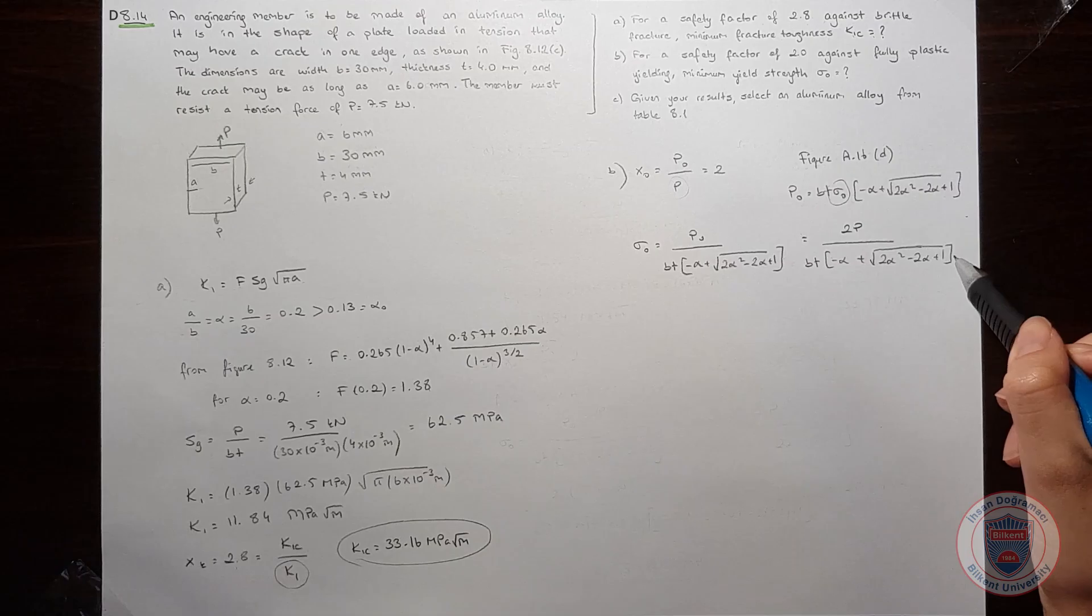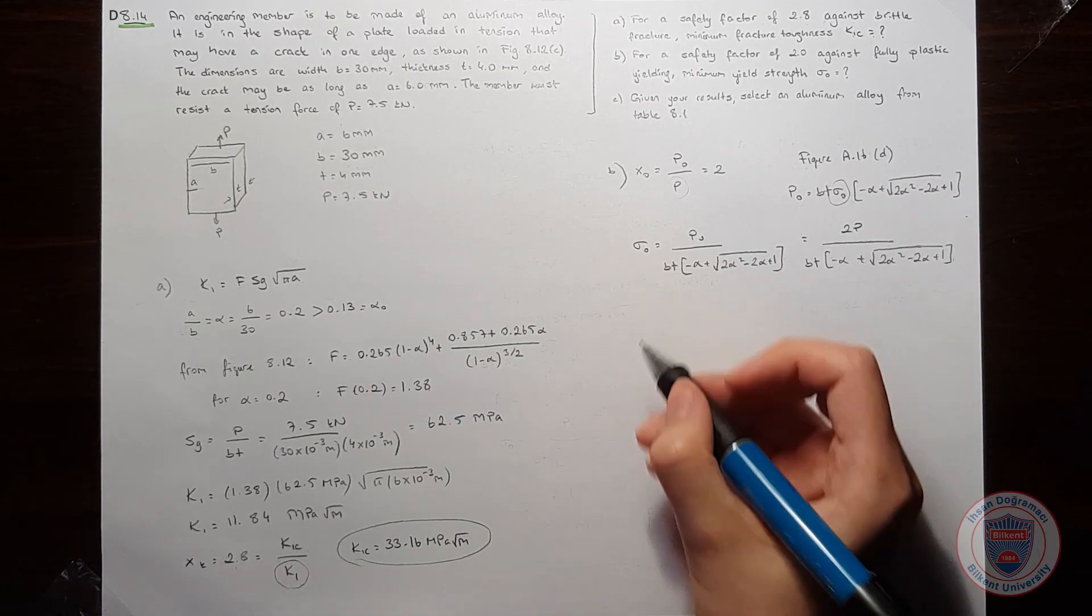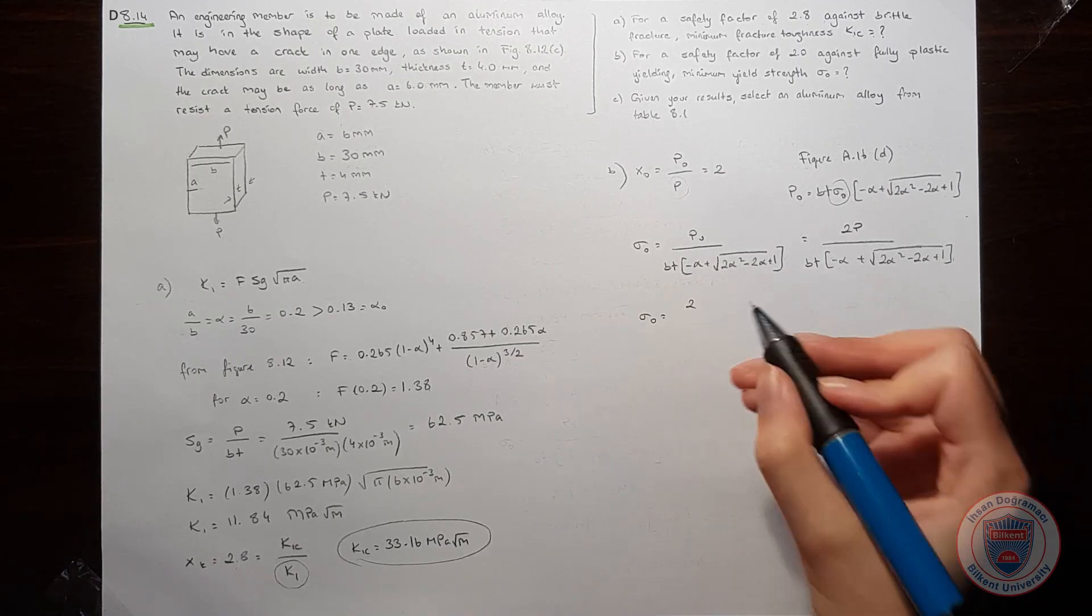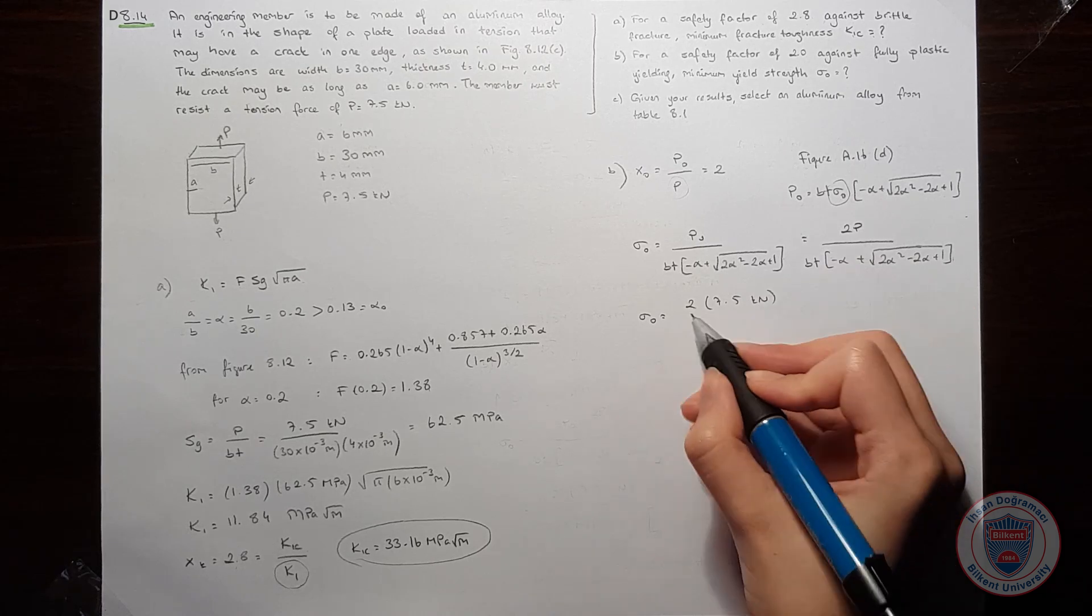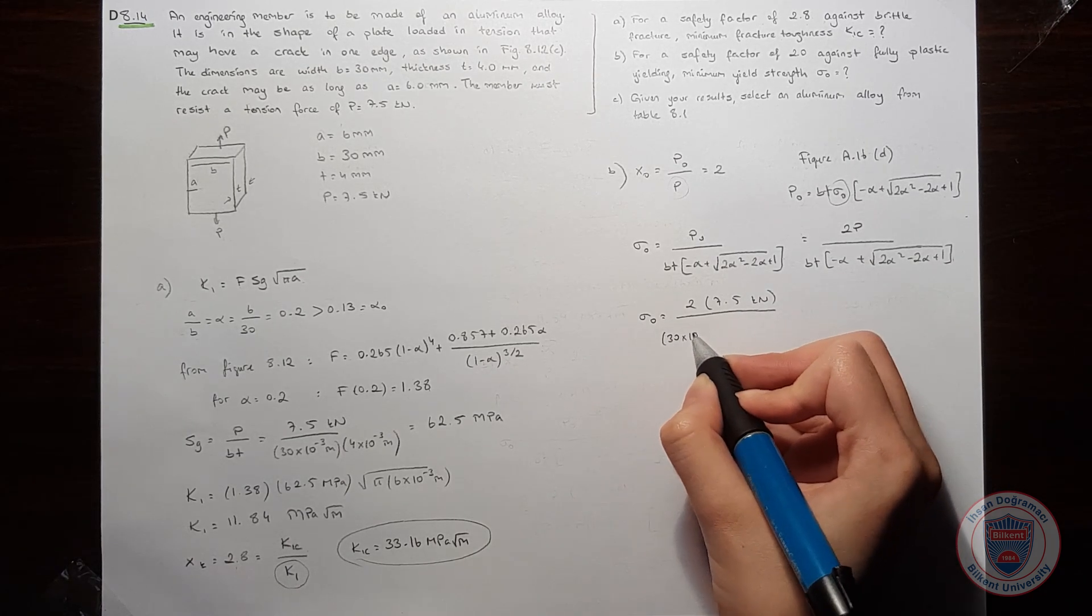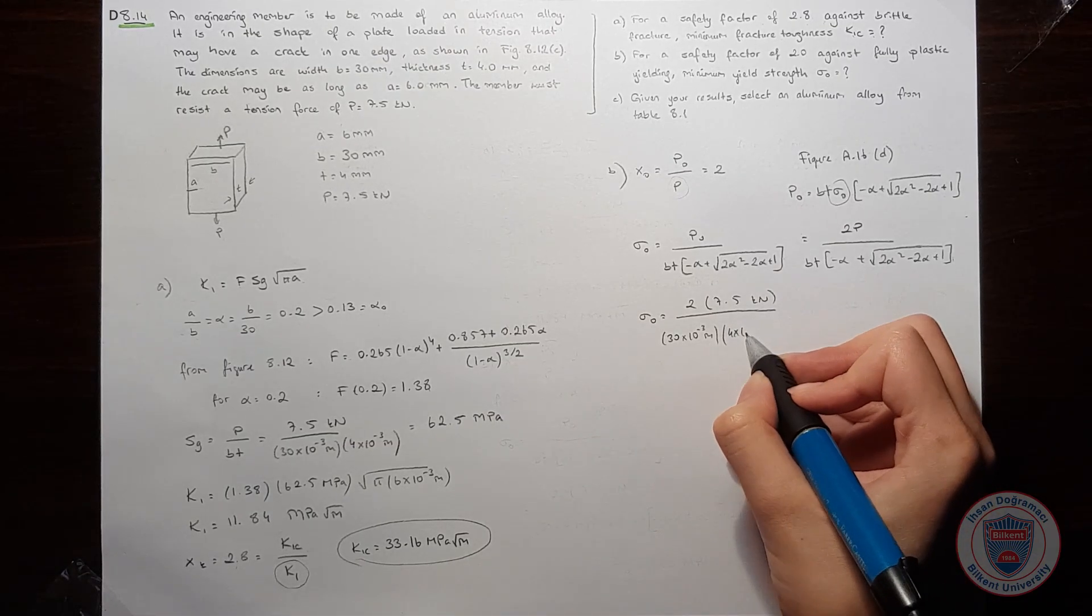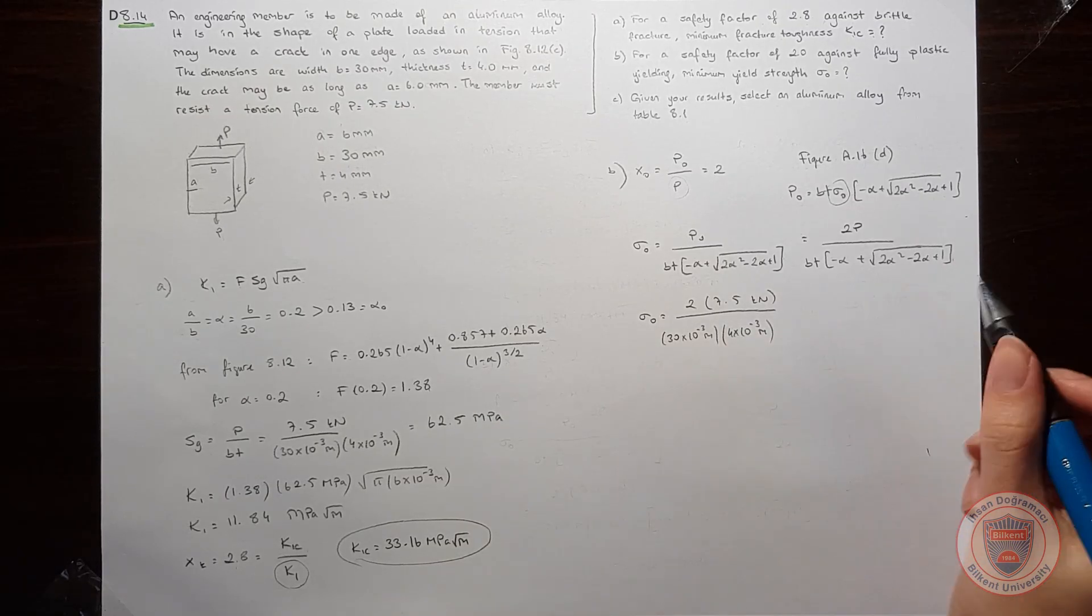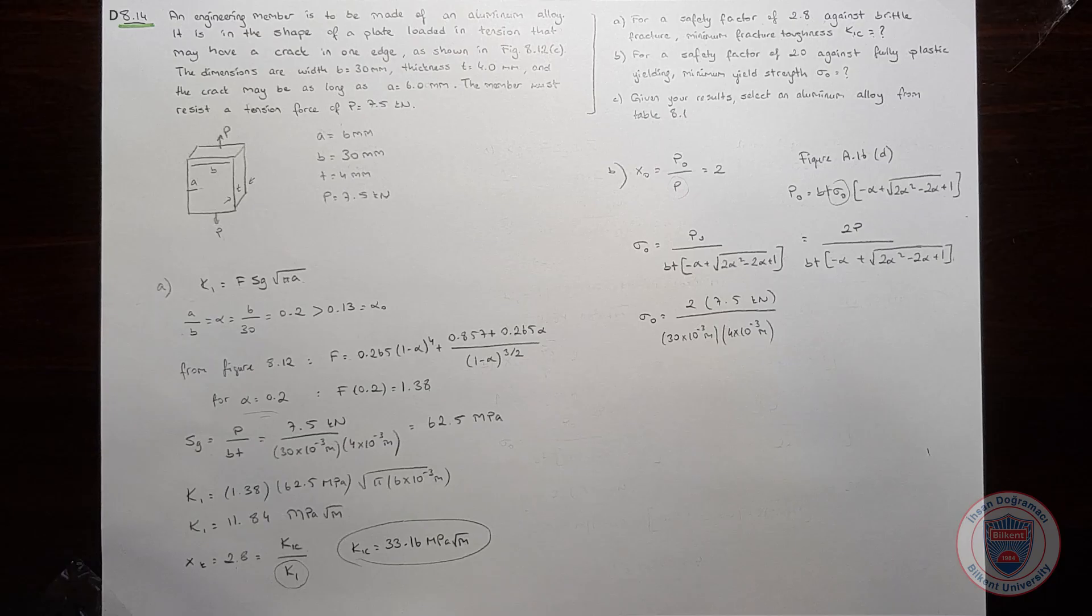We know all the values to calculate this part of the equation. When we substitute them, we can obtain 2 times 7.5 kilonewtons over 30 millimeters times the thickness. And we know that the alpha is 0.2. We calculated it here.